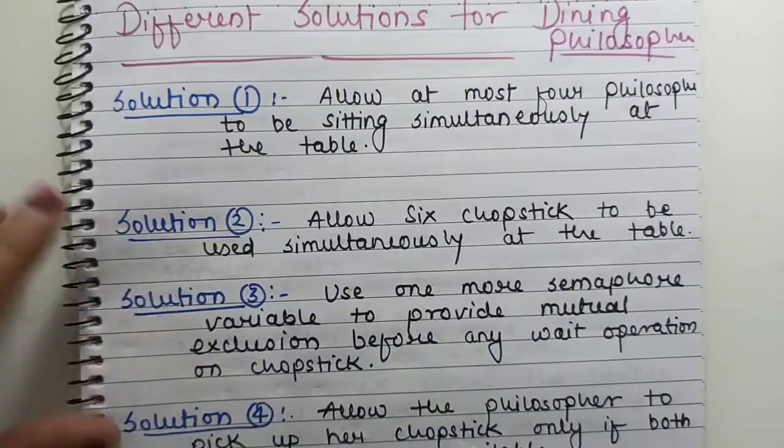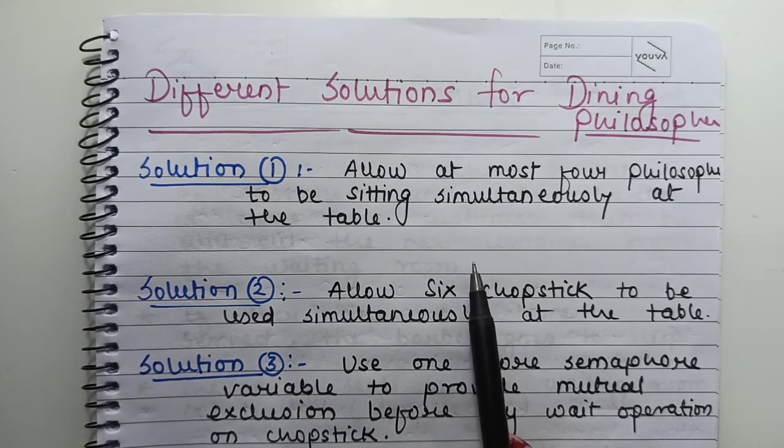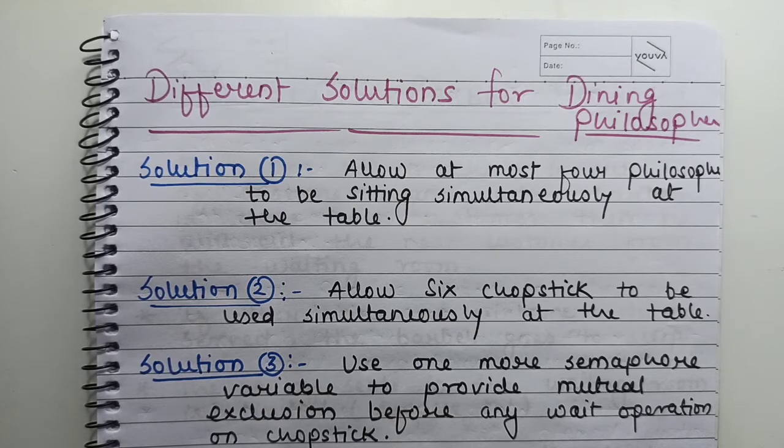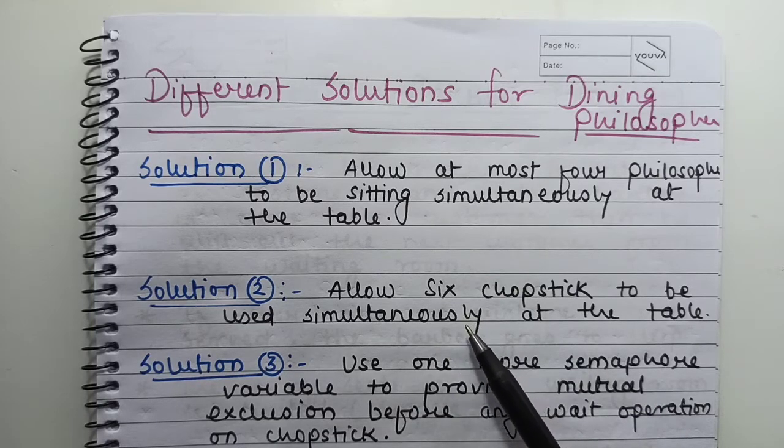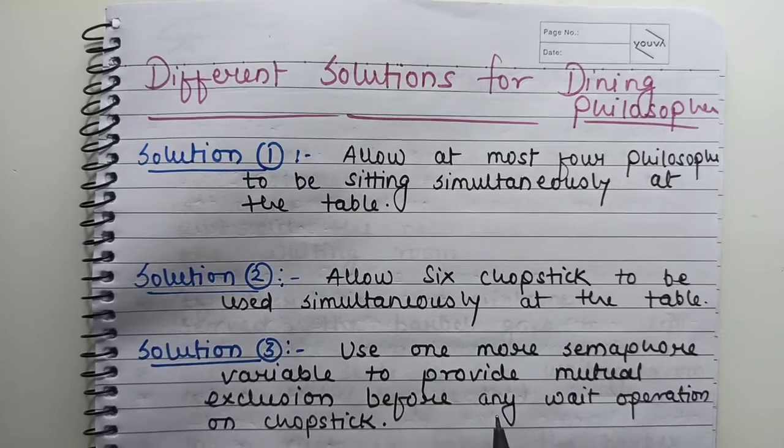Do you have any possible remedies to this deadlock problem? These are the different solutions. First solution: allow at most four philosophers to be sitting simultaneously at the table. If you have five chopsticks but only four philosophers, then if all get hungry at the same time, at least one will get two chopsticks, finish eating, put them down, and then others can get them. In this way, deadlock will not be there, though they may have to wait for a longer time. Second solution: allow six chopsticks to be used simultaneously at the table. Either reduce processes or increase resources. Both involve cost.